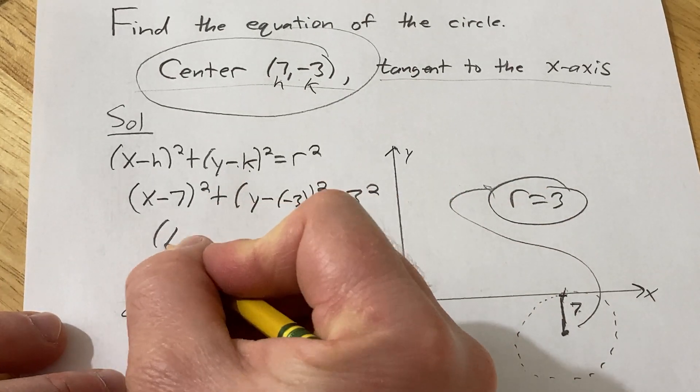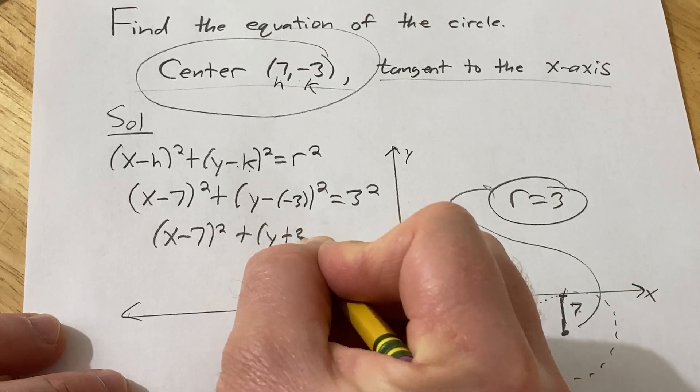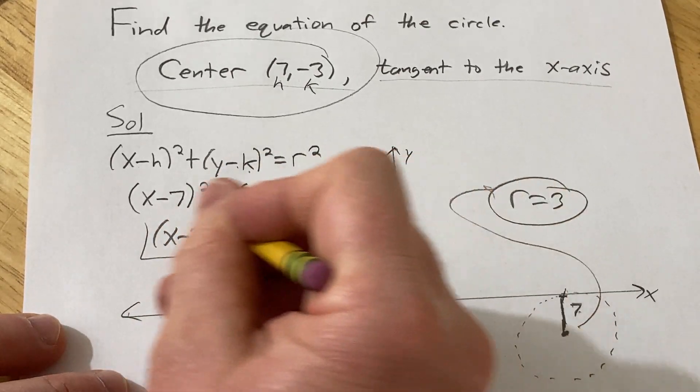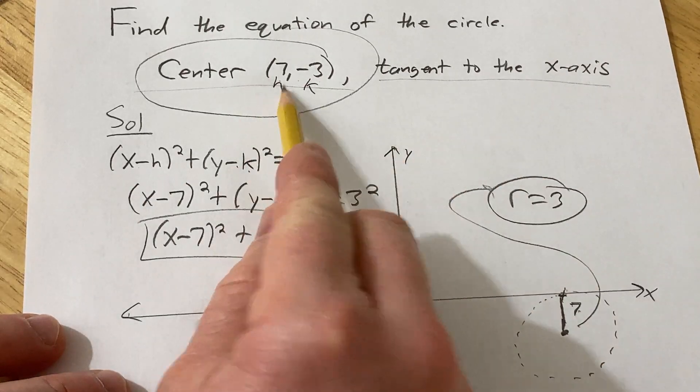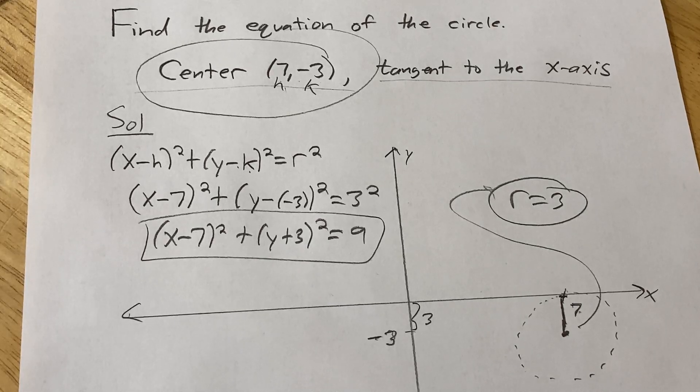So this is (x - 7)² + (y + 3)² = 9. And so that would be the equation of the circle with center (7, -3) that is tangent to the x-axis. I hope this video has helped someone. Good luck.